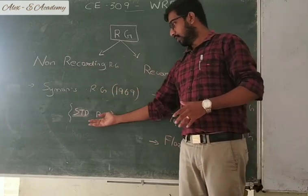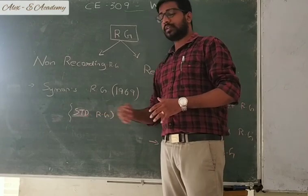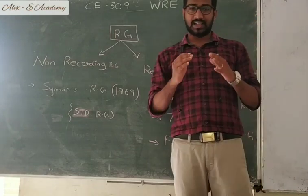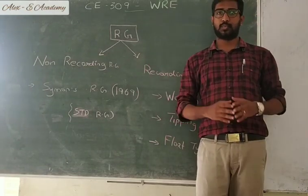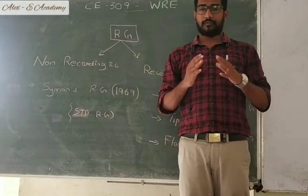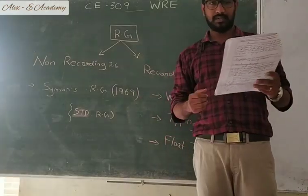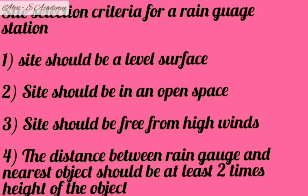Now let's see the criteria for selecting a rain gauge station. The site should be a level surface. The site should be in an open space. The site should be free from high winds. And fourth, the distance between the rain gauge and the nearest object should be at least two times the height of the object.